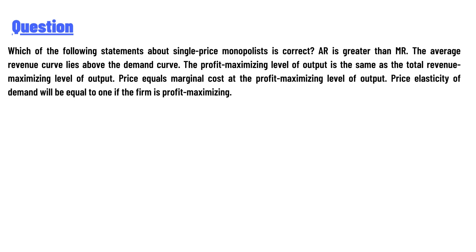The options are: A) AR is greater than MR; B) the average revenue curve lies above the demand curve; C) the profit maximizing level of output is the same as the total revenue maximizing level of output; D) price equals marginal cost at the profit maximizing level of output.